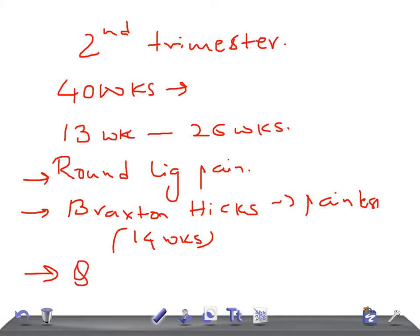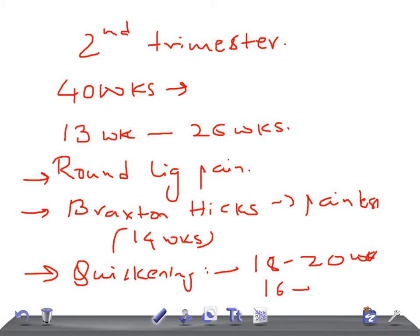Another important event is quickening — quickening is maternal awareness of fetal movements, where the mother starts feeling the baby moving. It is detected around 18 to 20 weeks. For primigravida it is 18 to 20 weeks, and for multigravida, who are more sensitive, it is earlier at 16 to 20 weeks.